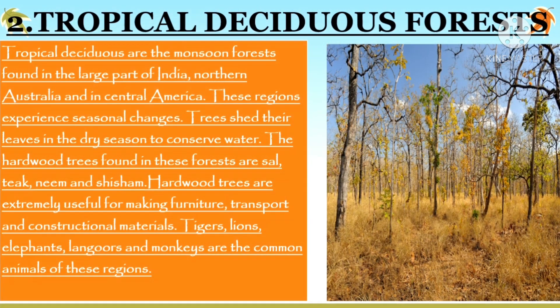Our next type is tropical deciduous forest. Tropical deciduous forests are the monsoon forests found in a large part of India, northern Australia and Central America. These regions experience seasonal changes.